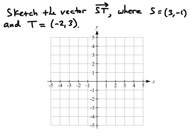Here we want to sketch the vector ST, where S is the point (3, -1) and T is the point (-2, 3).